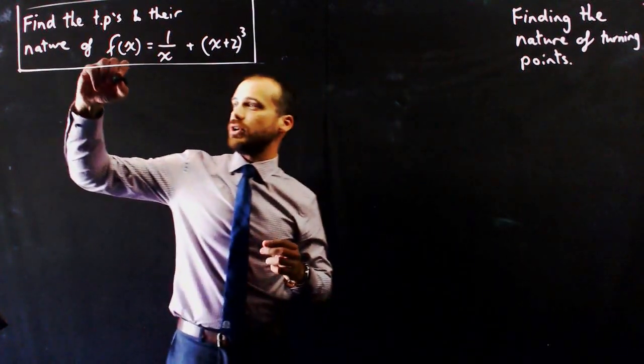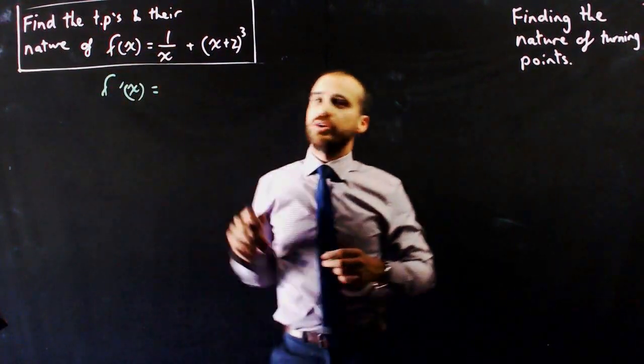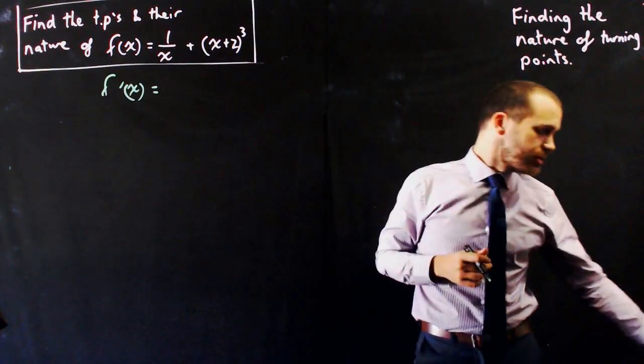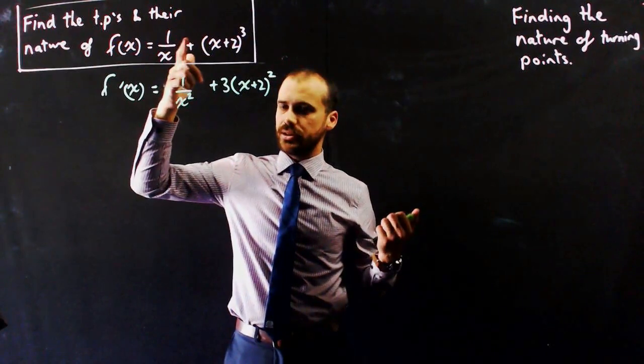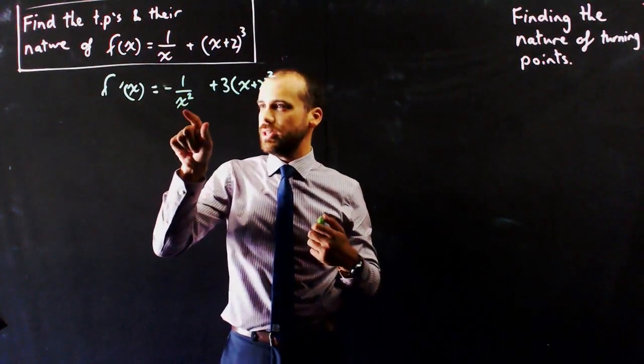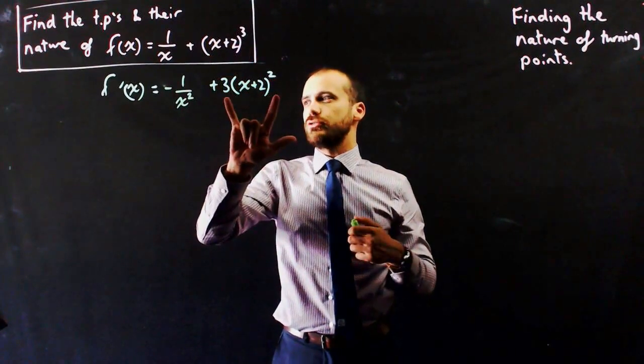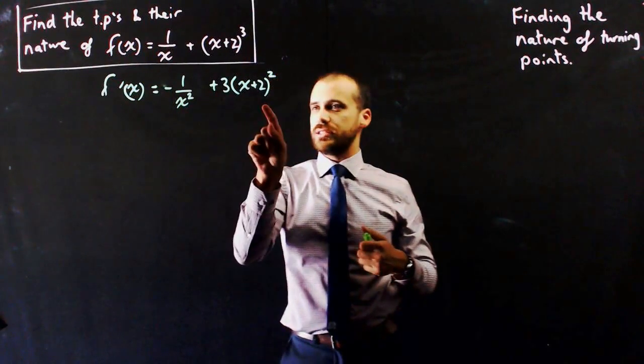So the first step here is to find the derivative of that. And you already know how to do that, so you can pause the video now and do it, or you can just wait and see what happens. I've worked on that, I moved x to the top and made it x⁻¹, found the derivative here, and then I did a little mini-chain rule here to find the derivative of that. So f(x) is that, f'(x) is that.